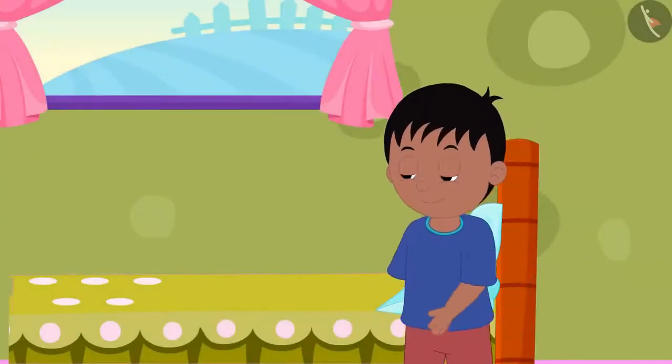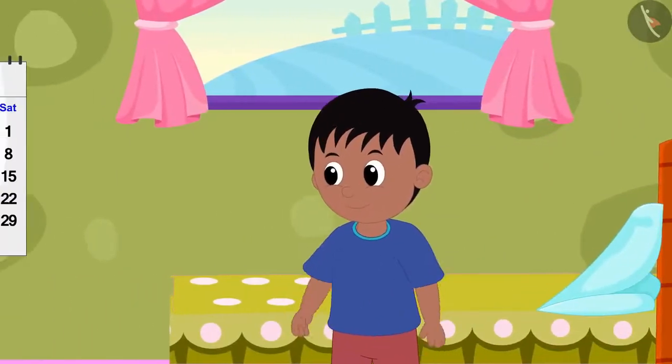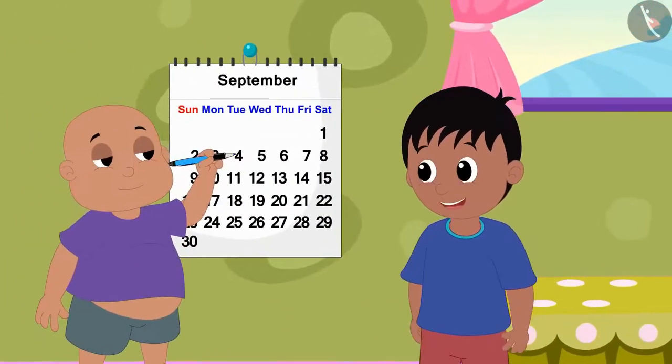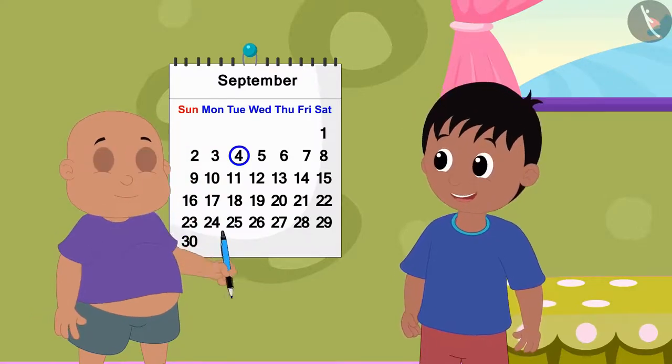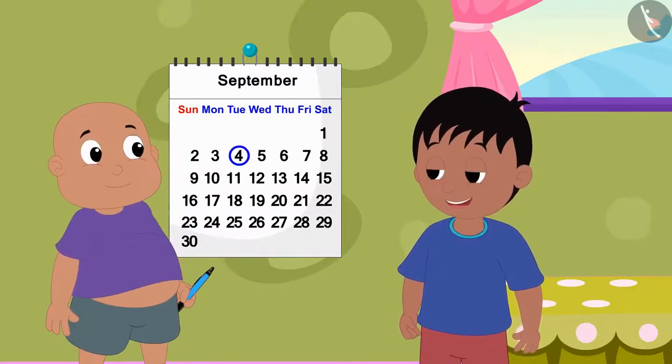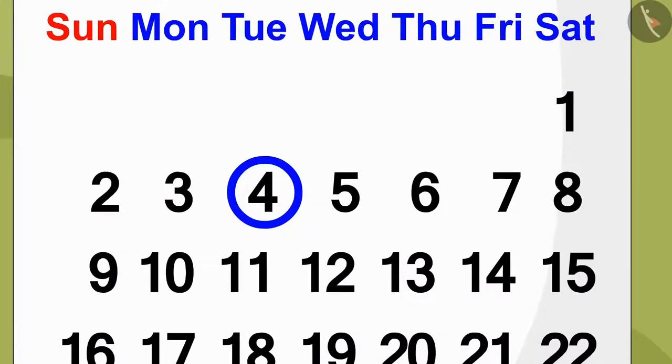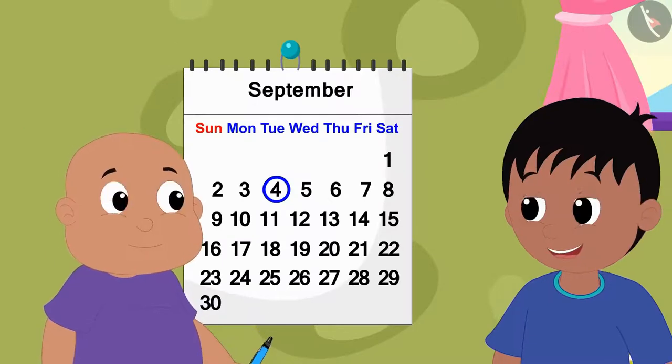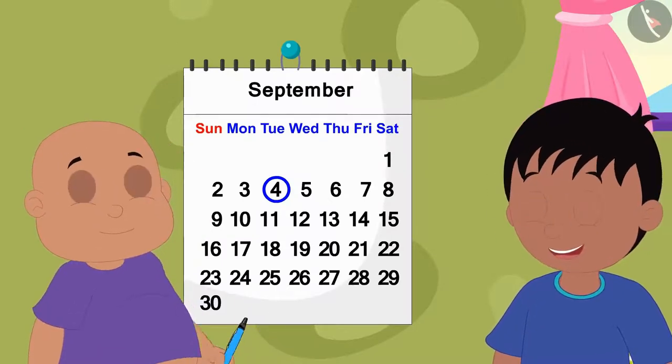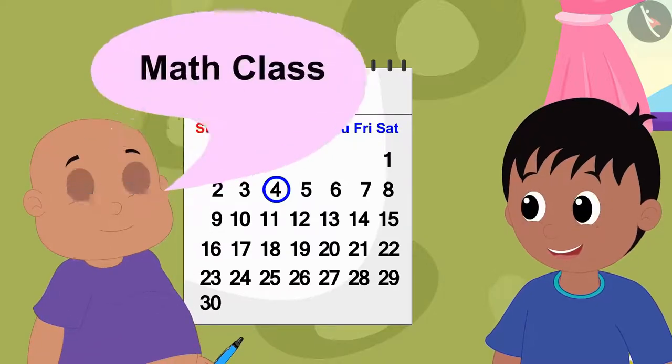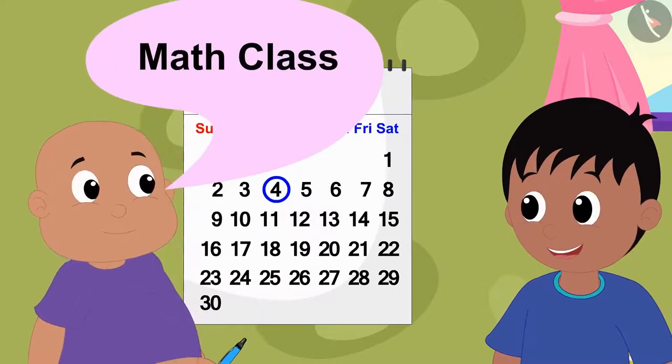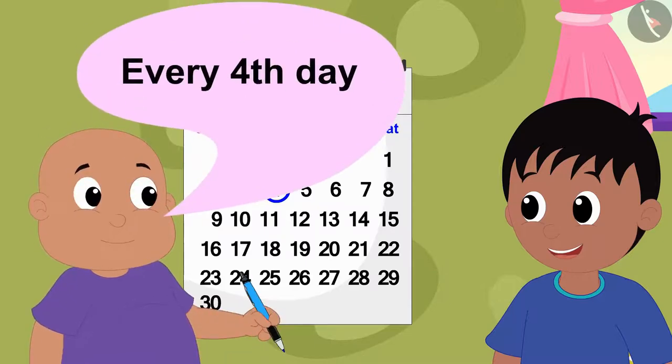Raju has come to Bablu's house. When he reached Bablu's house, he saw that Bablu was drawing circles on some dates on his home calendar like this. When Raju asks him what he is doing, Bablu tells him that he has enrolled in a math class and his class will be every fourth day.